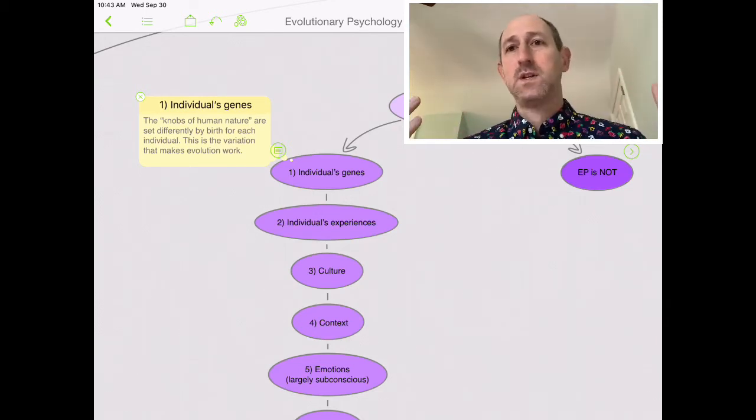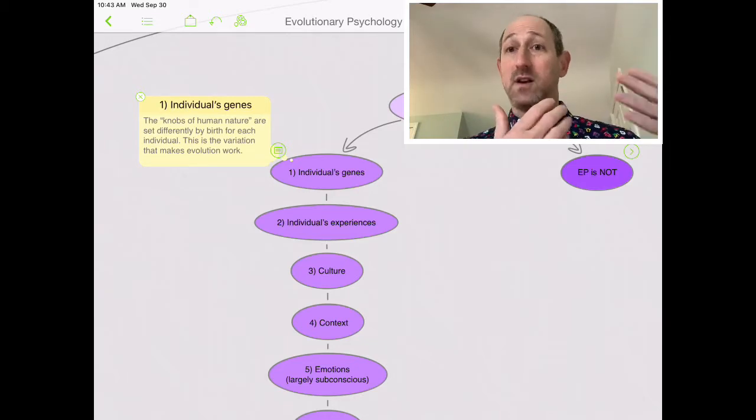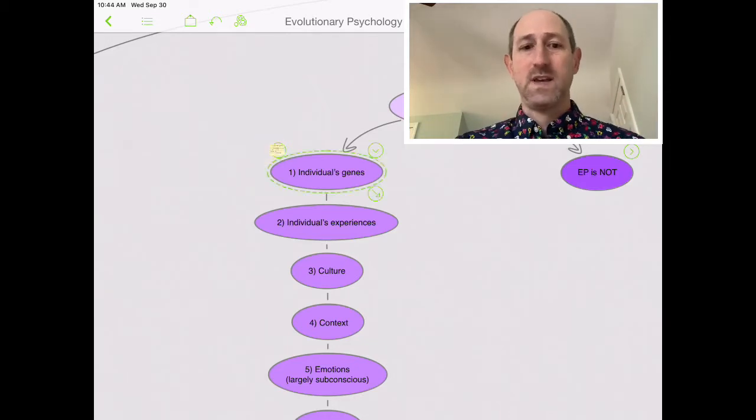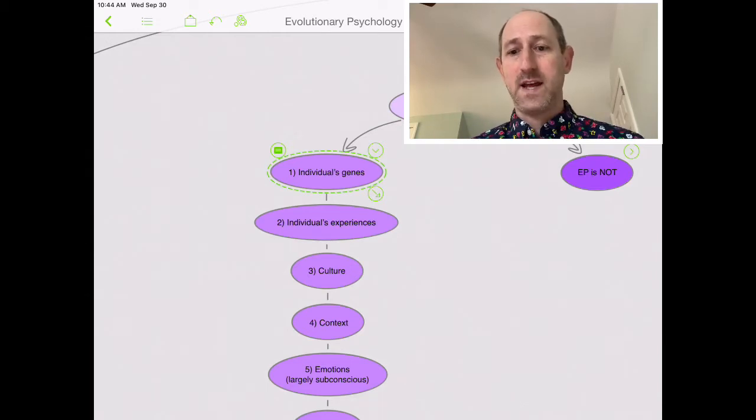Now they're set differently. Not everybody has the same setting by genetic predisposition as everyone else. Everyone knows that I may feel happier more easily than someone else, or I may feel sad more easily than somebody else. So there's variation, but the fact is we both have the capacity to feel happy or sad. The first thing that might explain my behavior is what are my individual settings?